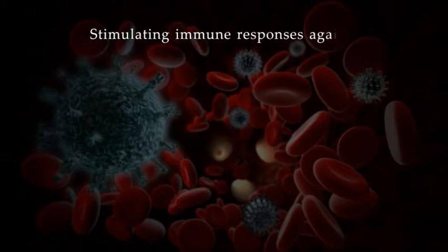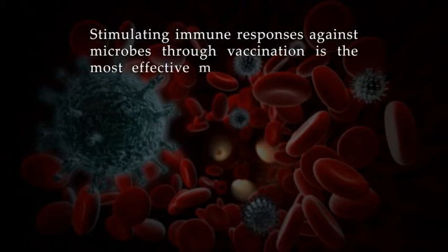Now, the importance of the immune system. The most important physiologic function of the immune system is to prevent or eradicate infections. The importance of the immune system for health is dramatically illustrated by the frequent observation that individuals with defective immune responses are susceptible to serious, often life-threatening infections. Conversely, stimulating immune responses against microbes through vaccination is the most effective method for protecting individuals against infection.